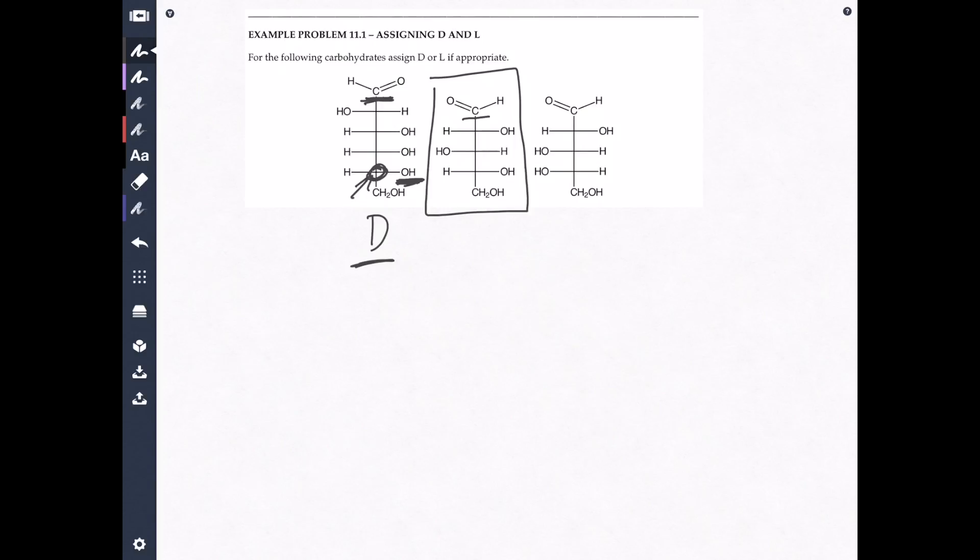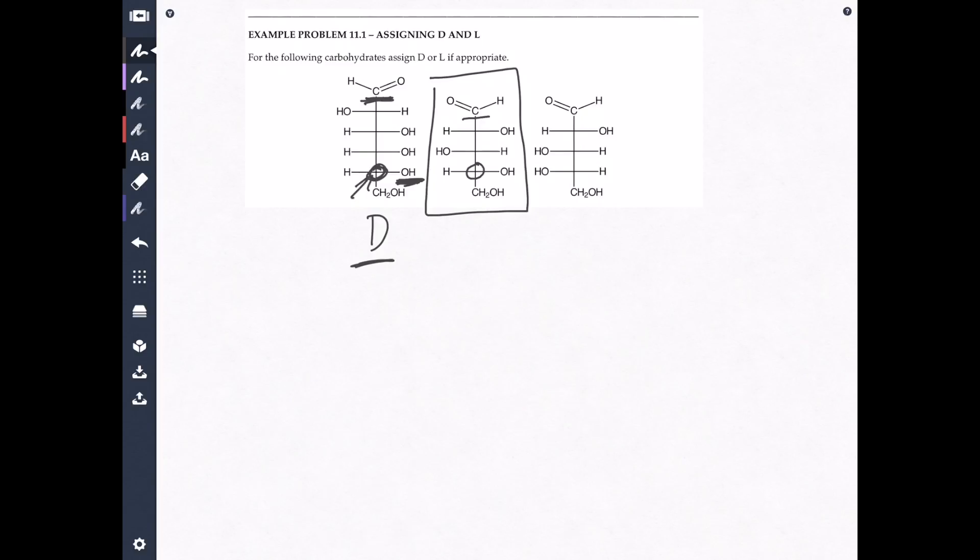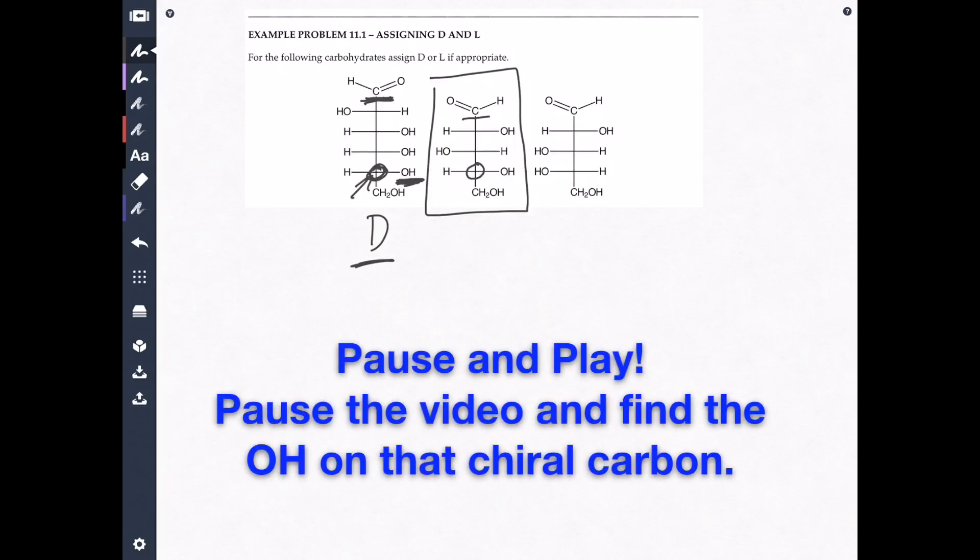Carbonyl is right there. Now, circle the chiral carbon that's furthest from the carbonyl. You may want to pause the video. Right. It's right here. Very good. Find the OH on that chiral carbon.